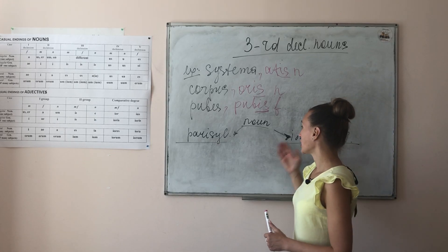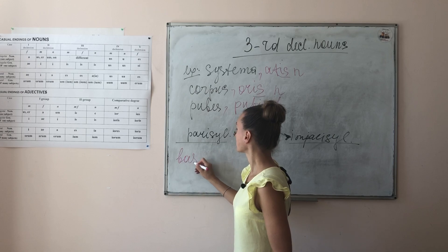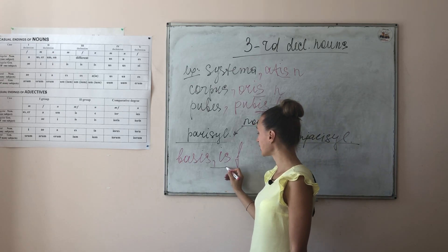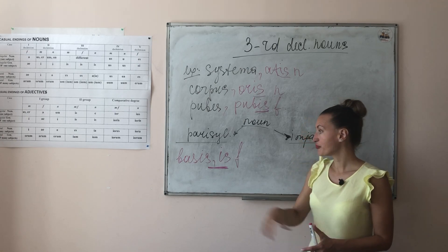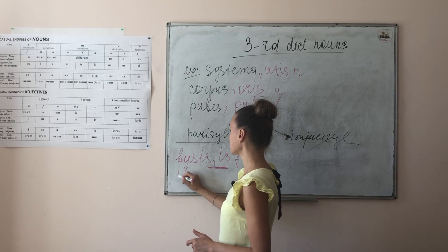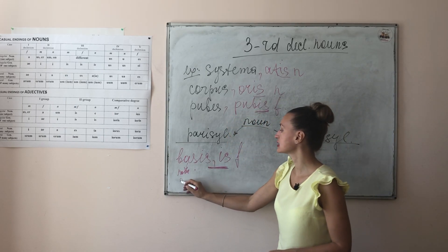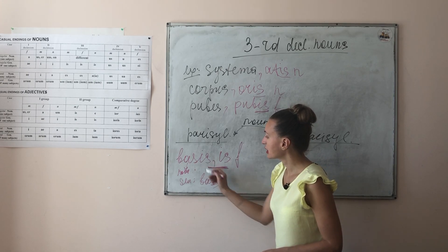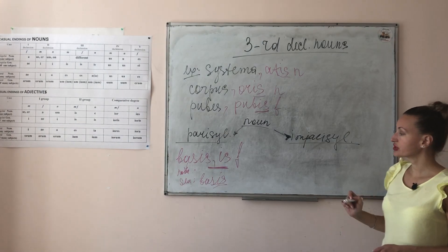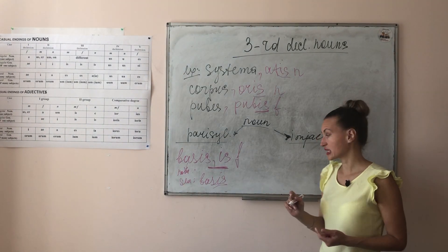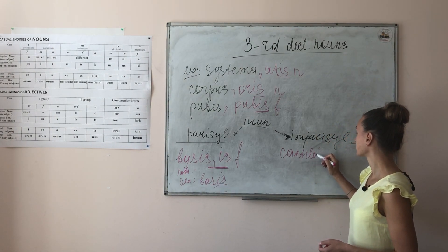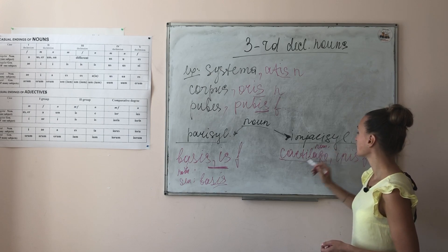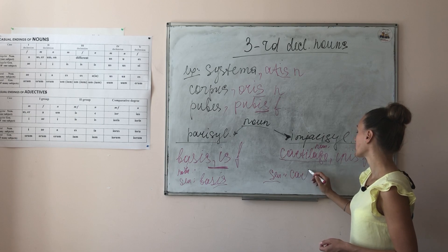What does it mean? If we have 'basis', for example, with an '-is' ending — feminine gender — and after the comma we also have an '-is' ending, it means that this is a parasyllabic word. It means that in the nominative case it will have the same amount of syllables as in the genitive case. For example, 'basis' in nominative and 'basis' in genitive — they are the same. A word is imparasyllabic if it has a different number of syllables in the nominative and genitive cases. For example, 'cartilago' is the nominative form, and the genitive will be 'cartilaginis'.